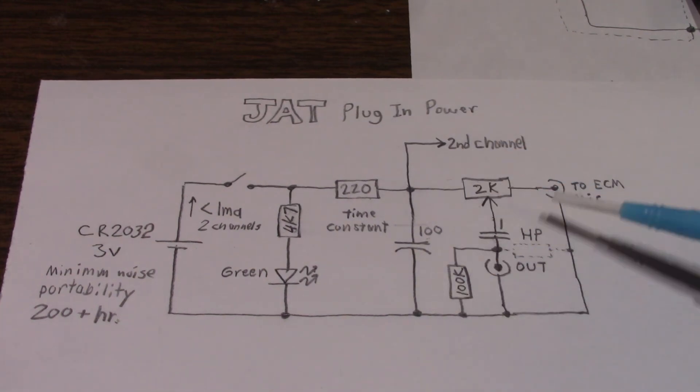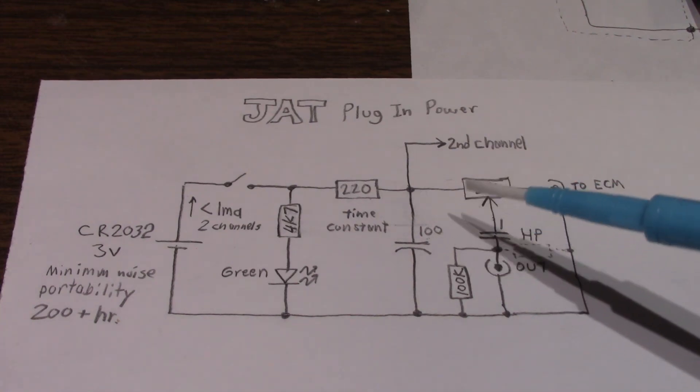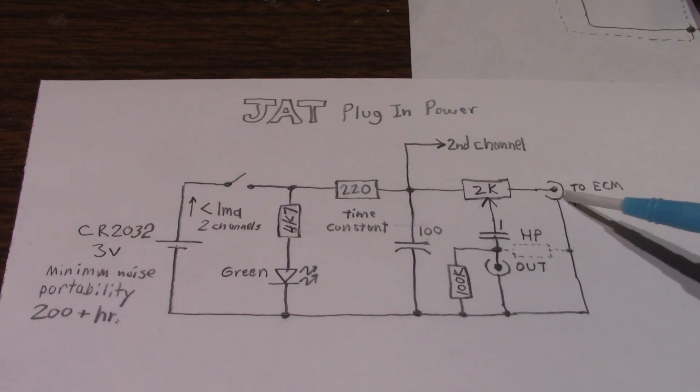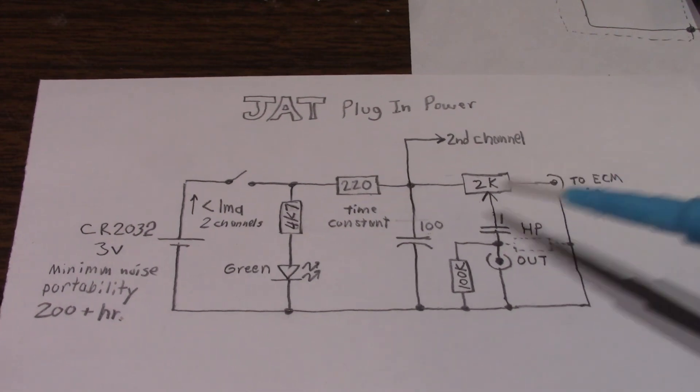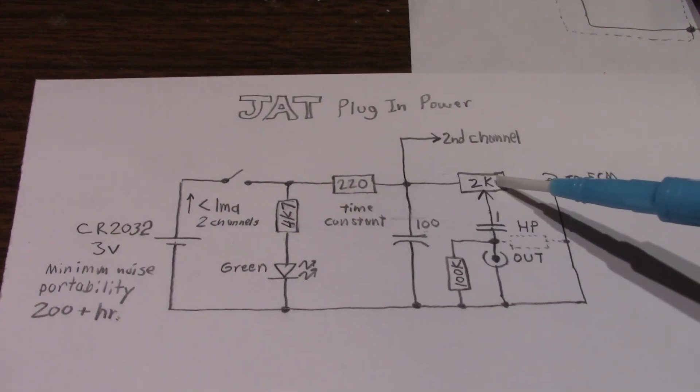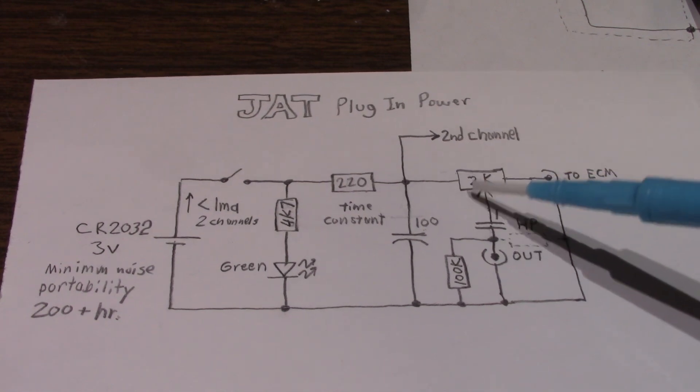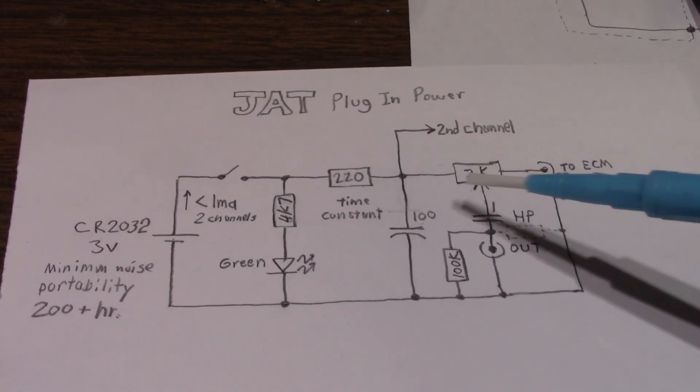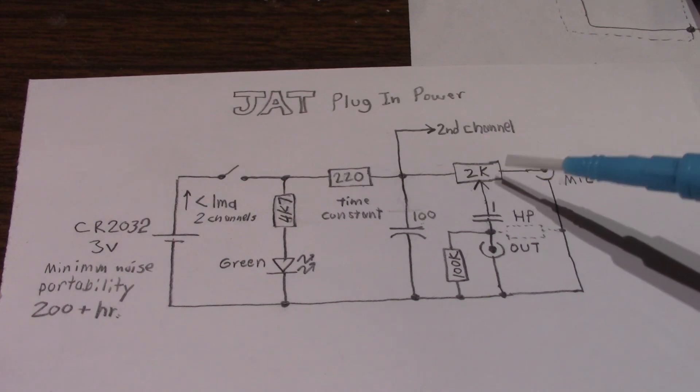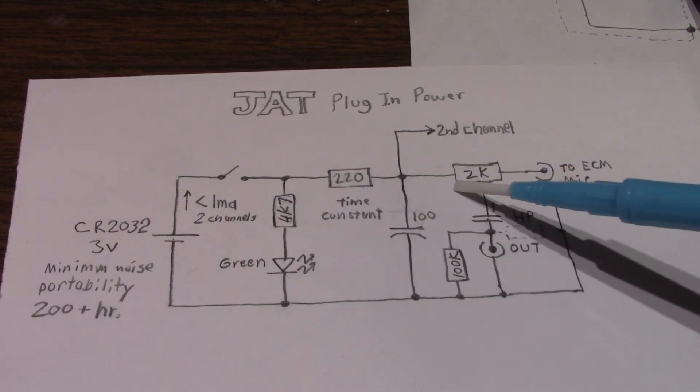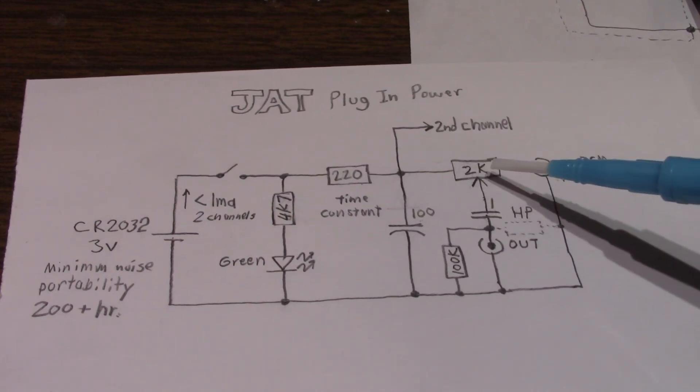And finally, the circuit. This is just for one channel, of course, for the ECM itself. So to set the operating point of the little JFET amplifier in the capsule, there's the 2 kilo ohm resistor, 2.2K or whatever. You know, most of these capsules are specified at 3 volts and require a 2K resistor.